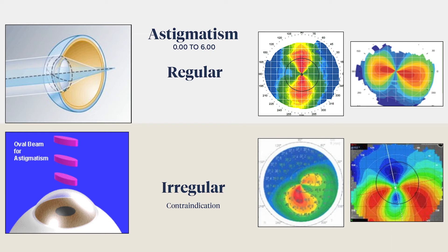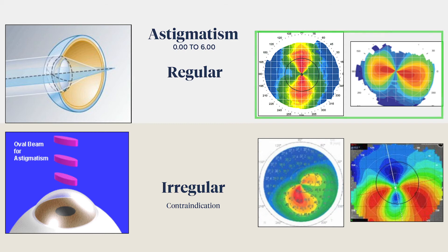During a complete pre-op evaluation, high-definition devices will establish a topographic map of the shape of your cornea. In these color maps, astigmatism can be seen in the typical shape of an hourglass or bowtie. To be a good candidate for laser surgery, astigmatism needs to be regular — in other words, symmetrical.